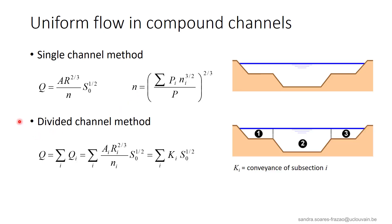In the second method, the divided channel method, the cross section is divided into three parts, and the discharge is the sum of the discharges over each subsection. This leads to an equation for the discharge where k is the conveyance, representing a specific factor. The wetted area and the wetted perimeter are calculated for each subsection. For subsection 1, the wetted area is the green area, and P1 consists of the red part only. The separation between subsections 1 and 2 is considered as frictionless and is not accounted for in the wetted perimeter.